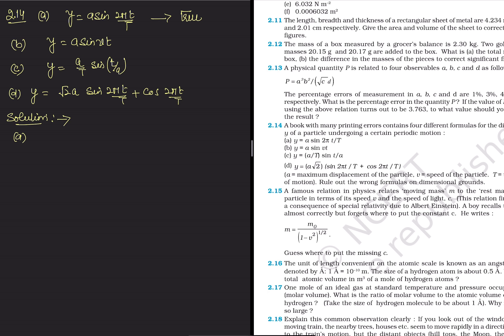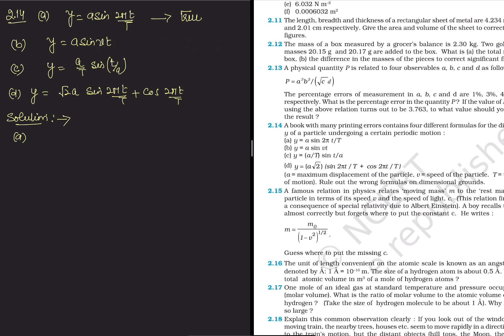For part (b): left hand side is displacement, and 'a' on the right is also displacement — that part is fine. But the argument of sin is v times t. Substituting dimensions: v has dimensions LT⁻¹ and t has dimension T, so v·t gives LT⁻¹ × T = L. The argument should be dimensionless but it gives dimension L. So this equation is wrong.